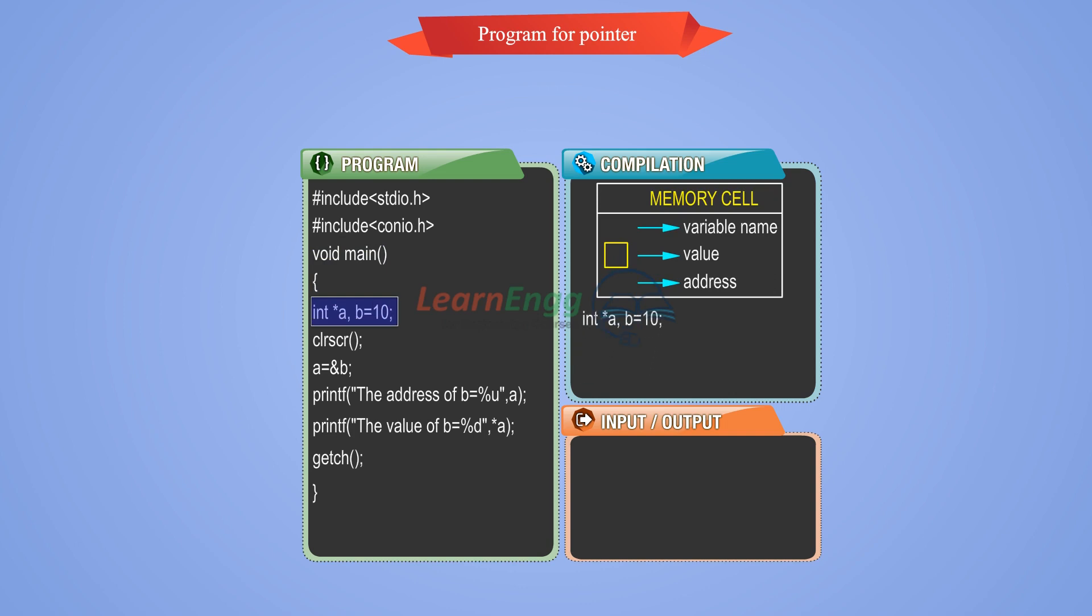Inside the main function, declare the pointer variable and required variable, where pointer variable uses asterisk. Clear screen function clears the console window.